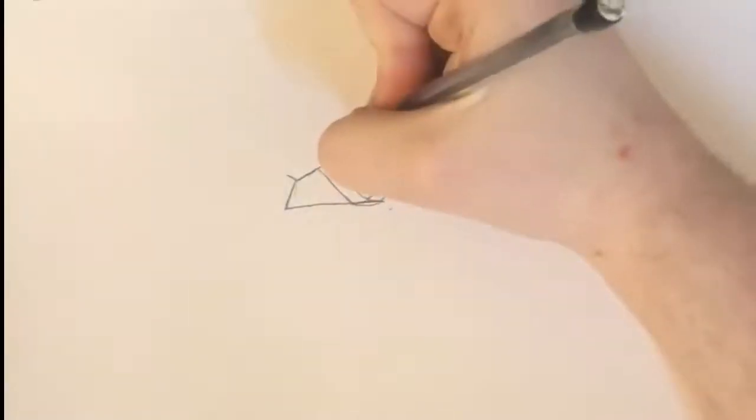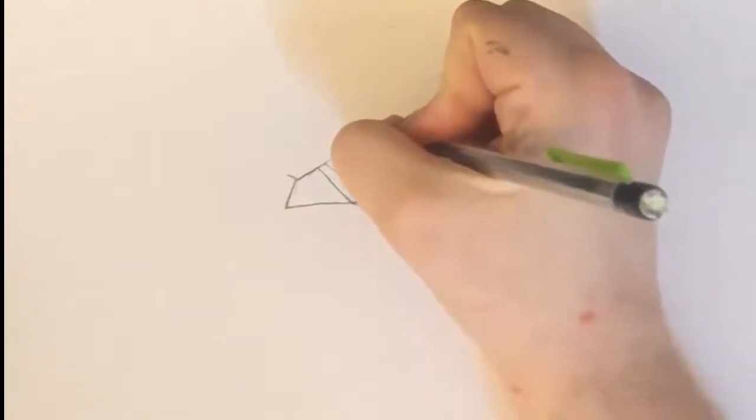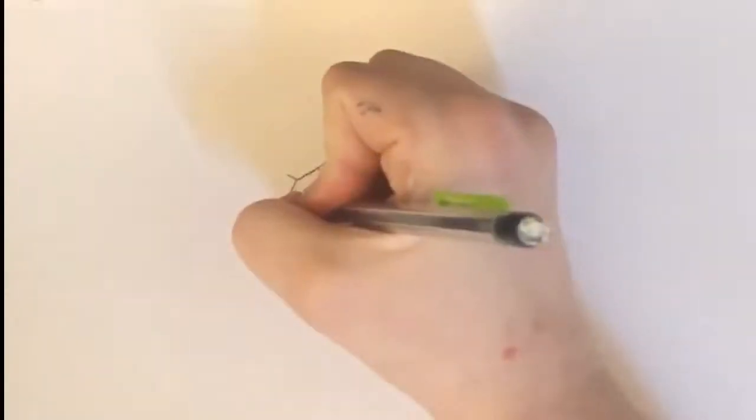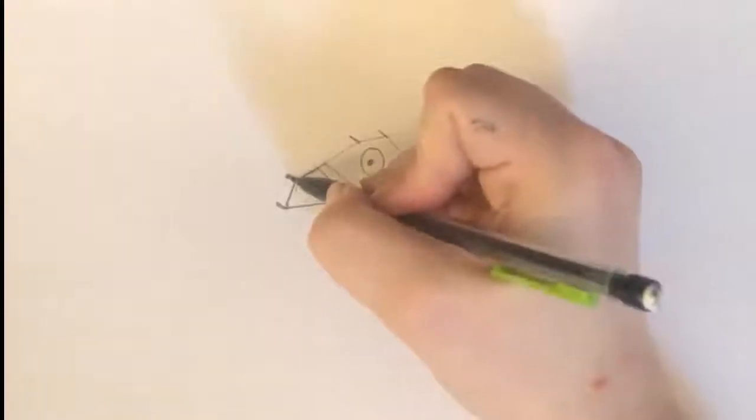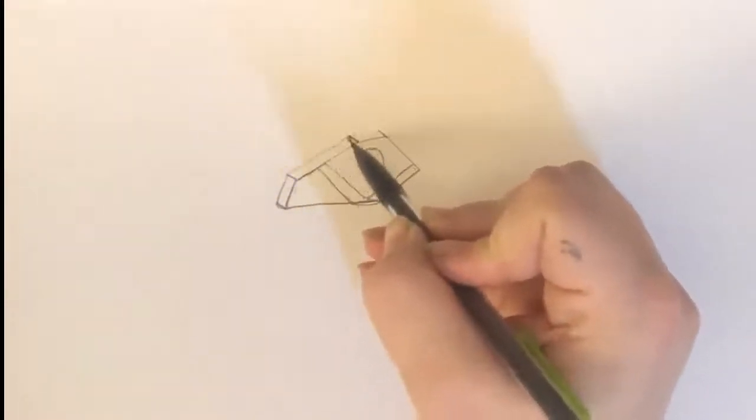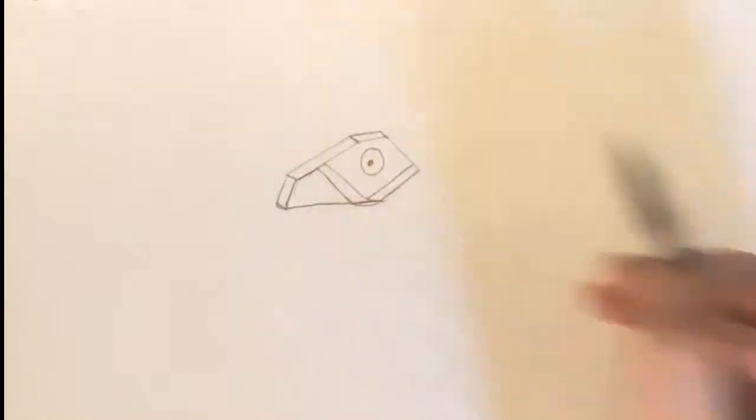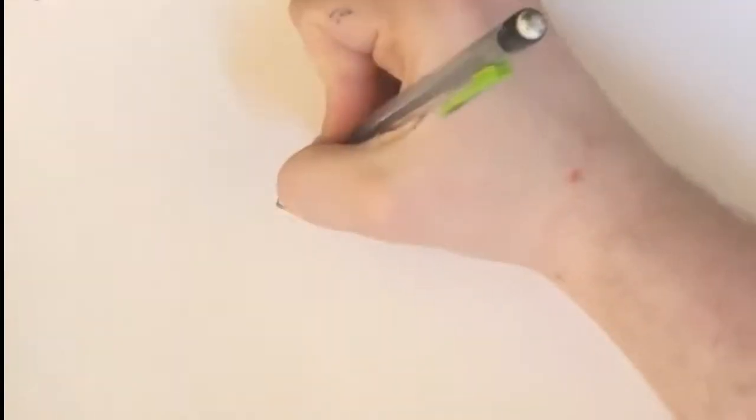Step 3. Give the llama's face a three-dimensional appearance. Extend short, straight lines from the corners on the top of the head and snout and from the harness. Connect them using straight lines. Shade two wide, short lines on the end of the snout to indicate nostrils.